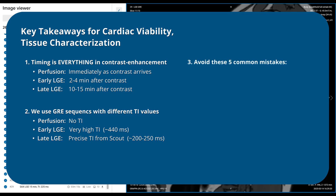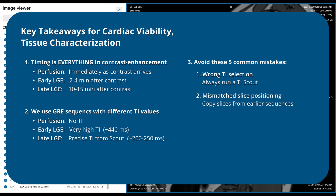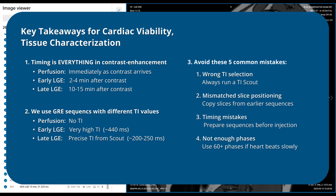Third, make sure to avoid these five common mistakes in contrast-enhanced cardiac MRI. One: wrong TI selection — always run a TI scout to find the exact value that nulls healthy myocardium. Two: mismatched slice positioning — copy the exact positions from your earlier Cine sequences to ensure comparable images. Three: timing mistakes — have all sequences ready before contrast injection, because you can't pause to plan mid-protocol. Four: not enough phases — use 60 or more phases for perfusion if the heart pumps slowly to capture the full cardiac cycle. And five: contrast safety issues — always check that the patient's eGFR is above 35 before injection.